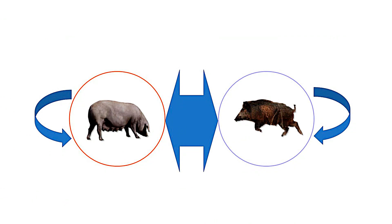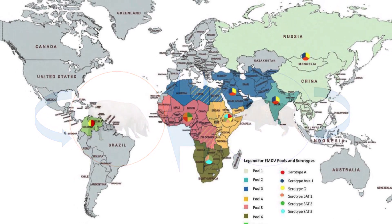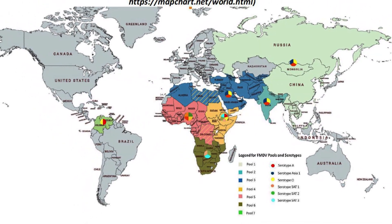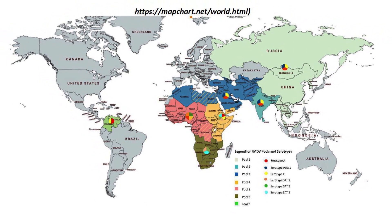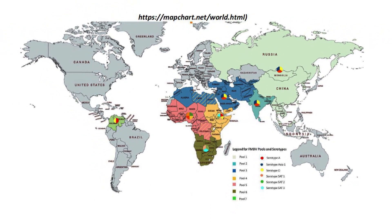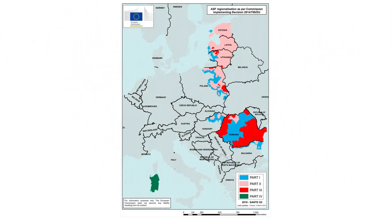Shared infections are multi-host infections caused by any kind of transmissible pathogen, where at least one wild and one domestic host species can be relevant for infection maintenance. Two such infections caused by viruses are currently of concern for the European Union: namely foot and mouth disease and African swine fever.